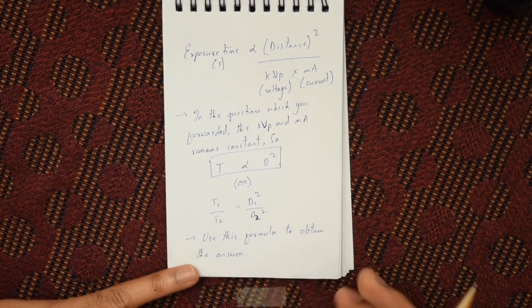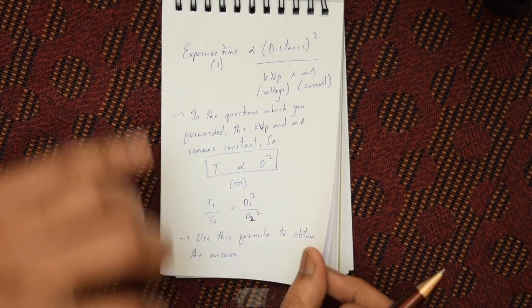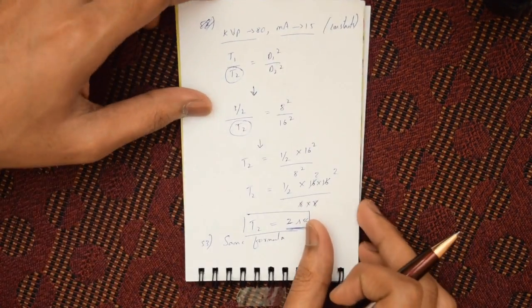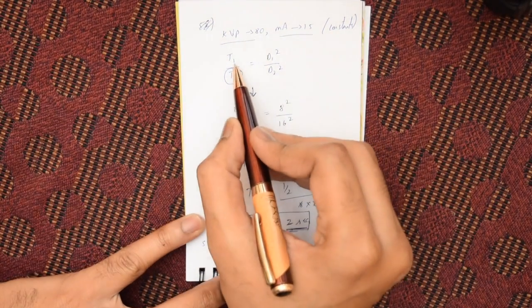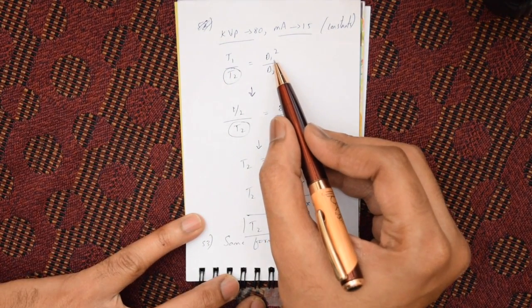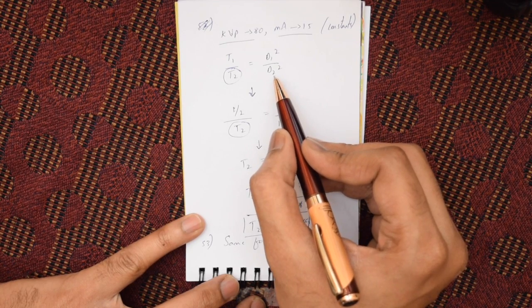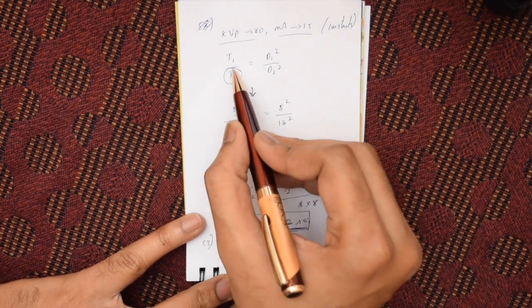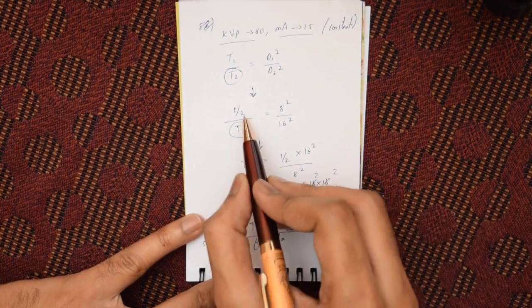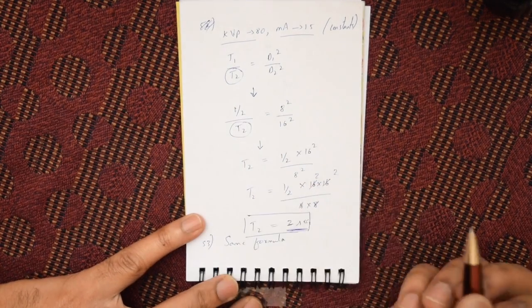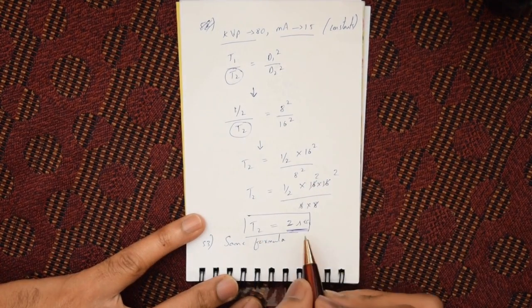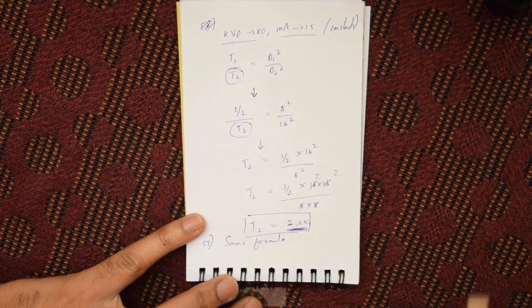Using this formula and substituting the values — T1 is half a second, D1 is 8 inches, and D2 is 16 inches — we can solve for T2. The final answer is two seconds.